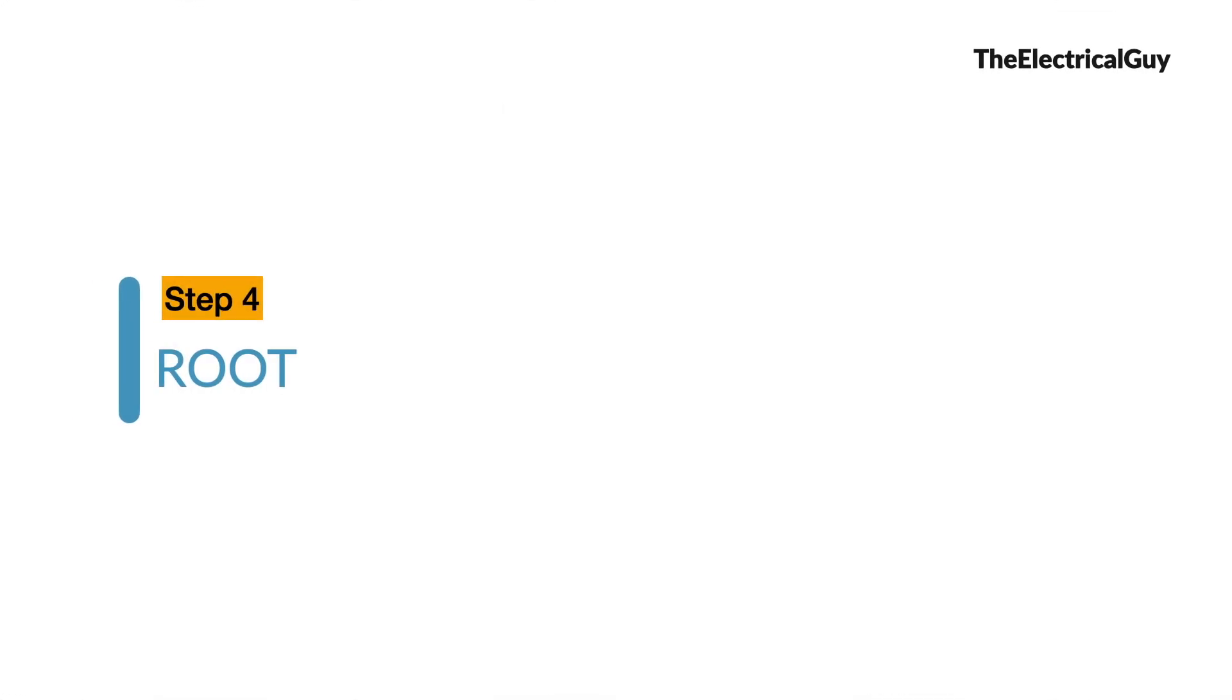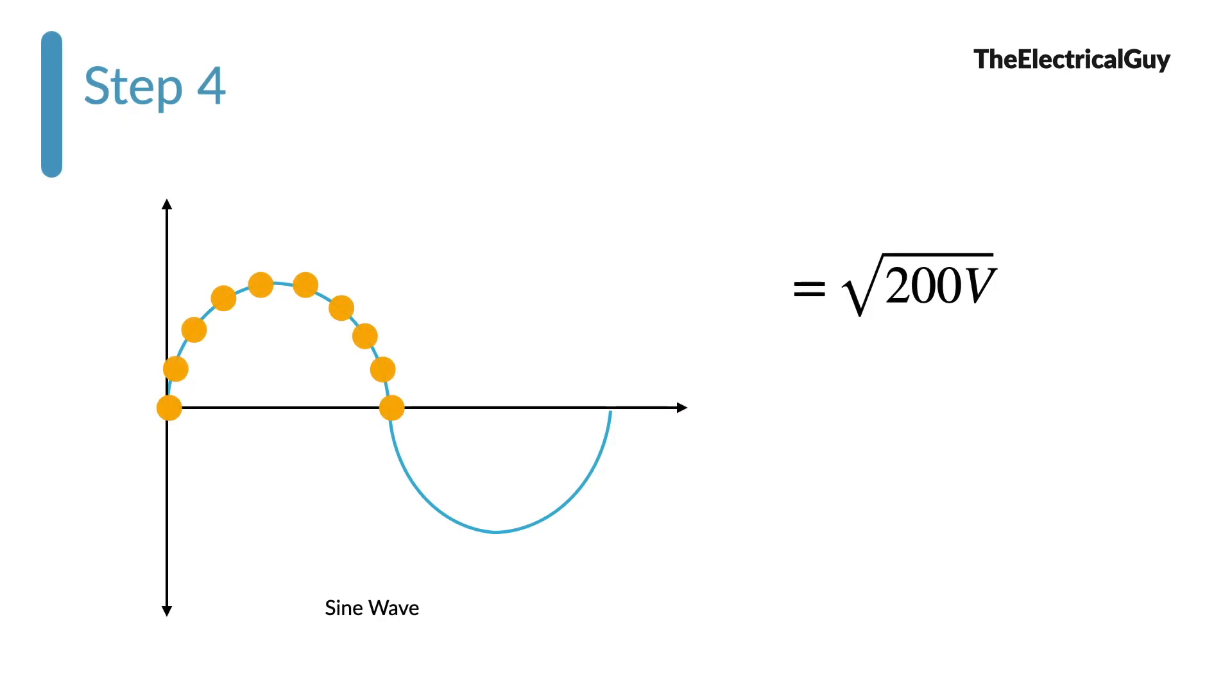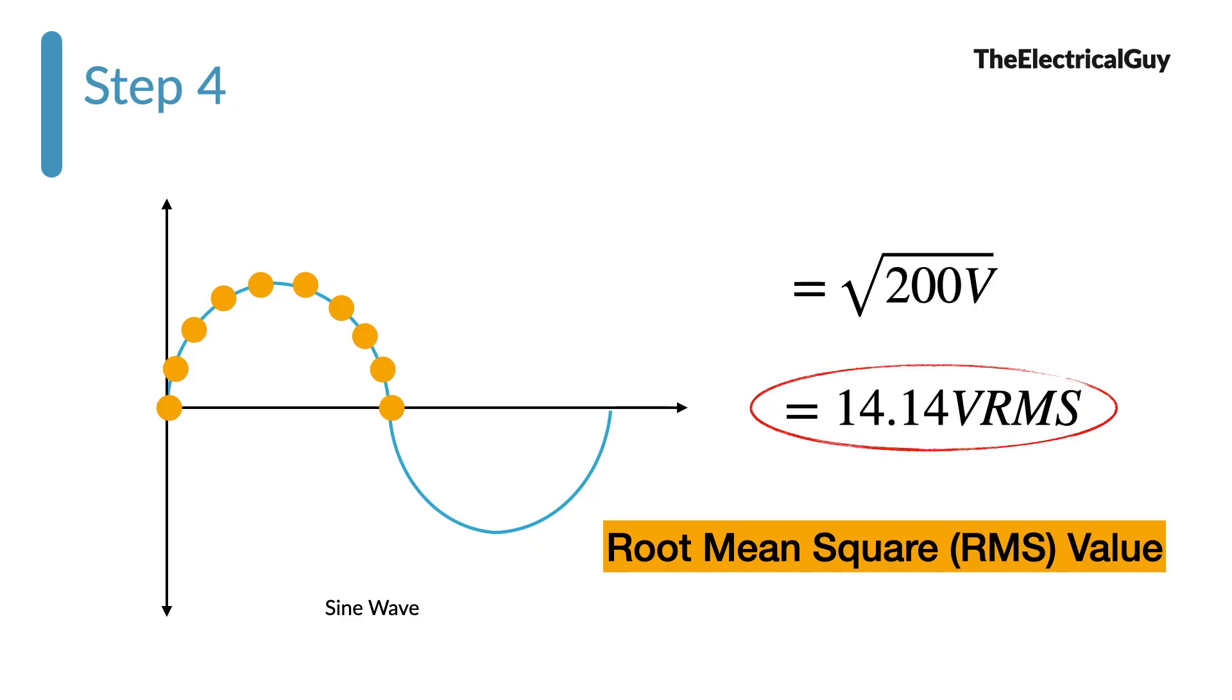Step number 4. Square root. Simply take the square root of the final value. Now the value that we have is the effective value of AC voltage and this is called as RMS value that is root mean square value. So in our example the peak value is 20V where the effective value or the RMS value is 14.14V. This 14.14V AC is equal to the 14.14V DC. Which means RMS value is equivalent to its DC value. And of course we can use the RMS value for power calculation purpose because it is the effective value of AC.